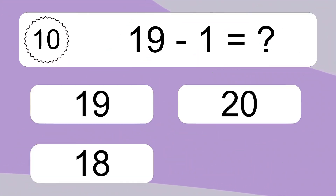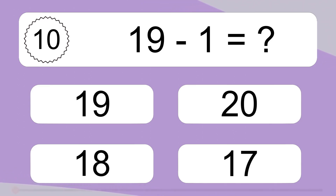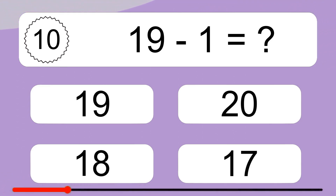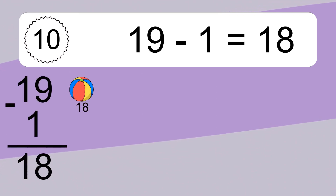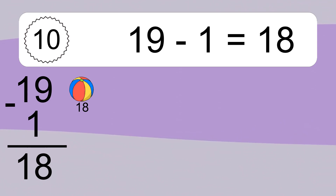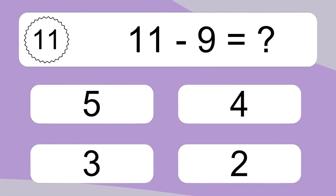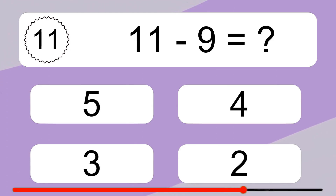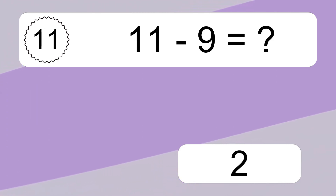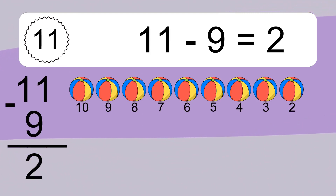19 minus 1 equals what? 19 minus 1 equals 18. Let's count it. 18. 11 minus 9 equals 2. Let's count it. 10, 9, 8.